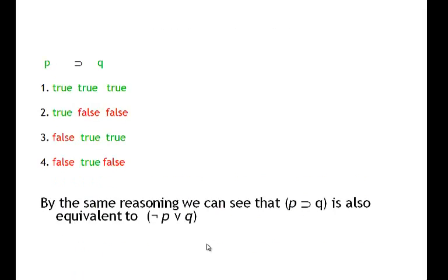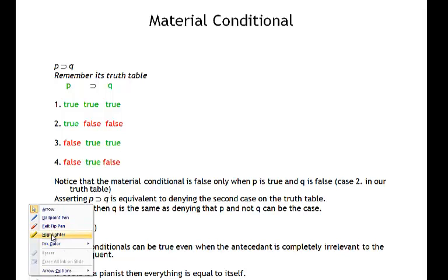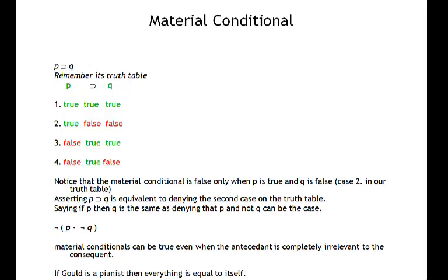Let's look at our truth table here. We'll recall that the conditional if p then q is false only in the second case where p is true and q is false, and true in all of the other cases.